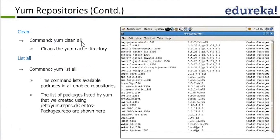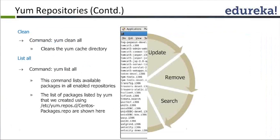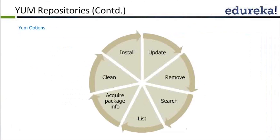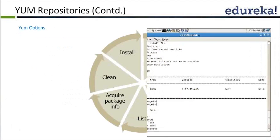Once that is done, you can create the cache and list all packages available in the repository. Whenever you say YUM install for a particular package, it will go and fetch that package from your local repository. These are all the arguments available along with YUM.